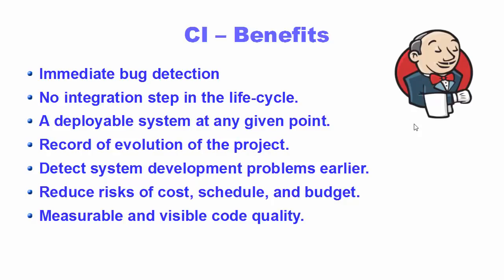Let's talk about some of the benefits or advantages of a CI system. First, a CI system enables immediate bug detection — bugs will be detected if some test or build fails, and at any given point you have a deployable system when your tests and build pass. Next, you have a record of the evolution of your project: how many times your build or tests succeeded, and at what point your build or unit test failed — giving you a full record of your code's history.